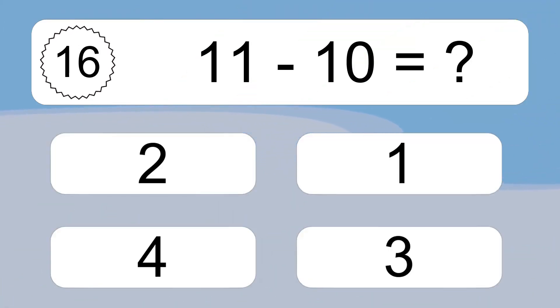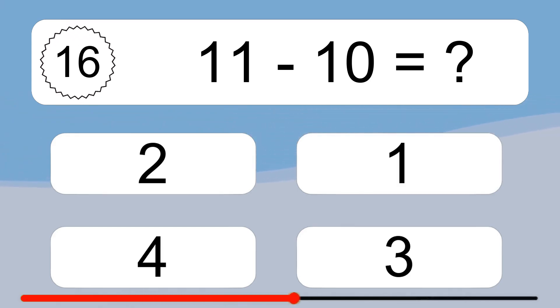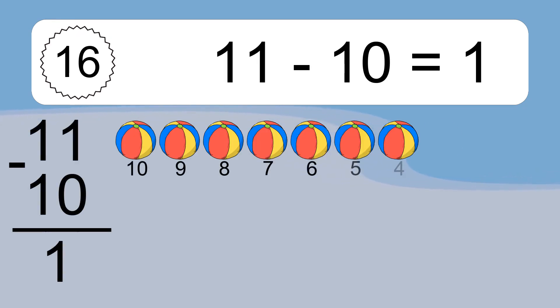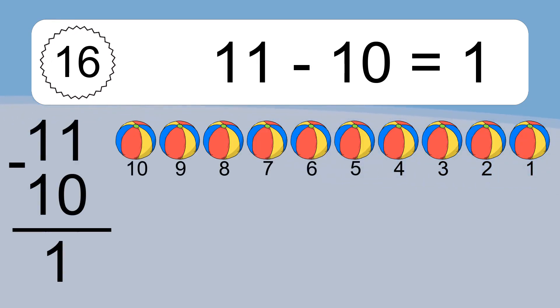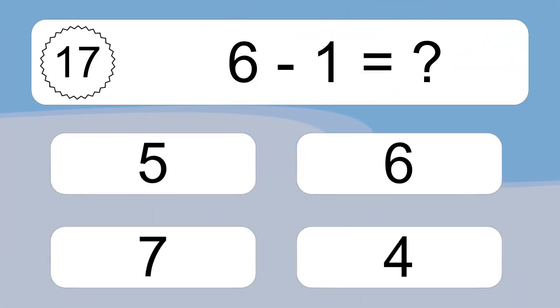11 minus 10 equals what? 11 minus 10 equals 1. Let's count it: 10, 9, 8, 7, 6, 5, 4, 3, 2, 1.